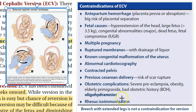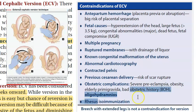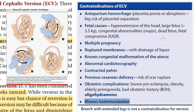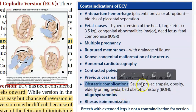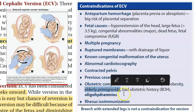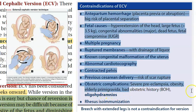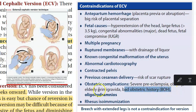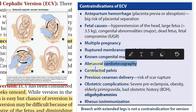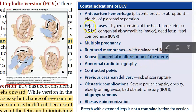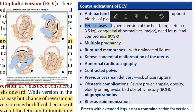Rh isoimmunization is a contraindication because if the mother is Rh-negative and the baby is Rh-positive, you don't want maternal and fetal blood to mix. Other contraindications include obstetric complications such as eclampsia, elderly primigravida due to pelvic rigidity, bad obstetric history, and abnormal cardiotocography indicating fetal distress — which is itself an indication for cesarean section.